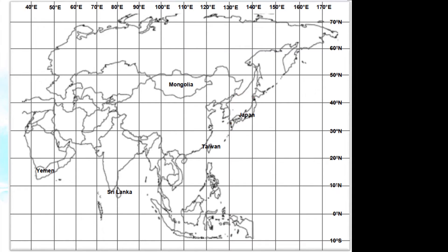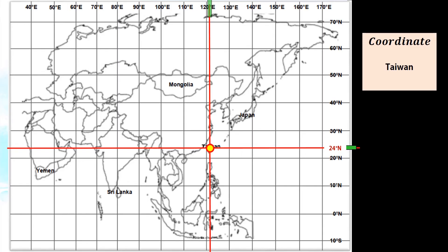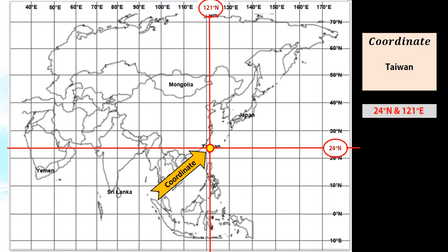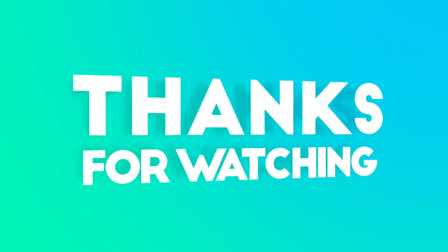Another example. Let us find out the approximate coordinate of Taiwan. Let us put a dot on Taiwan and place a horizontal red line at 24 degrees North and a vertical red line at 121 degrees East that passes across the dot. The dot is the intersection of latitude and longitude. Thus, the approximate coordinate of Taiwan is 24 degrees North and 121 degrees East.